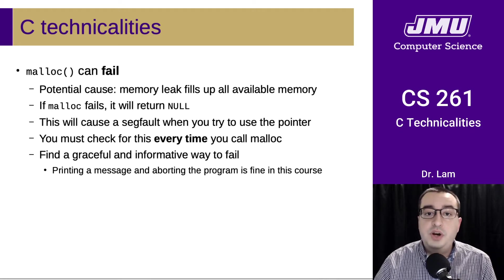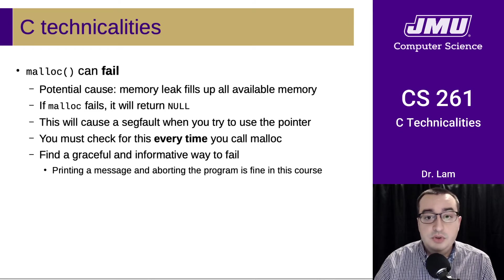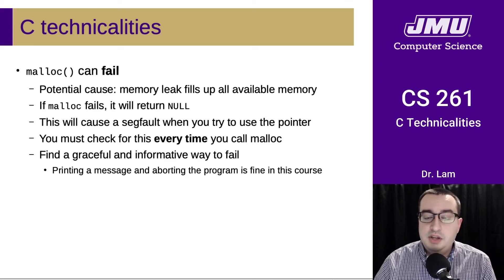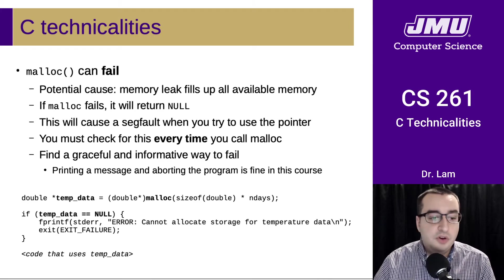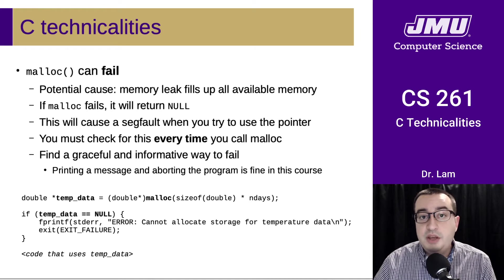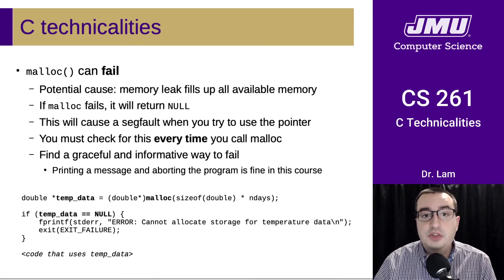You really need to check for this every time you call malloc, and find a graceful and informative way to fail. In this course, if you can't allocate memory for something you need, you really just need to abort the program — print a message and then abort. For instance, from the previous slide: allocate space for a double array, cast it to a double star, check if it's null, print an error message, and then abort. You can include code like this whenever you call malloc or one of its related functions.